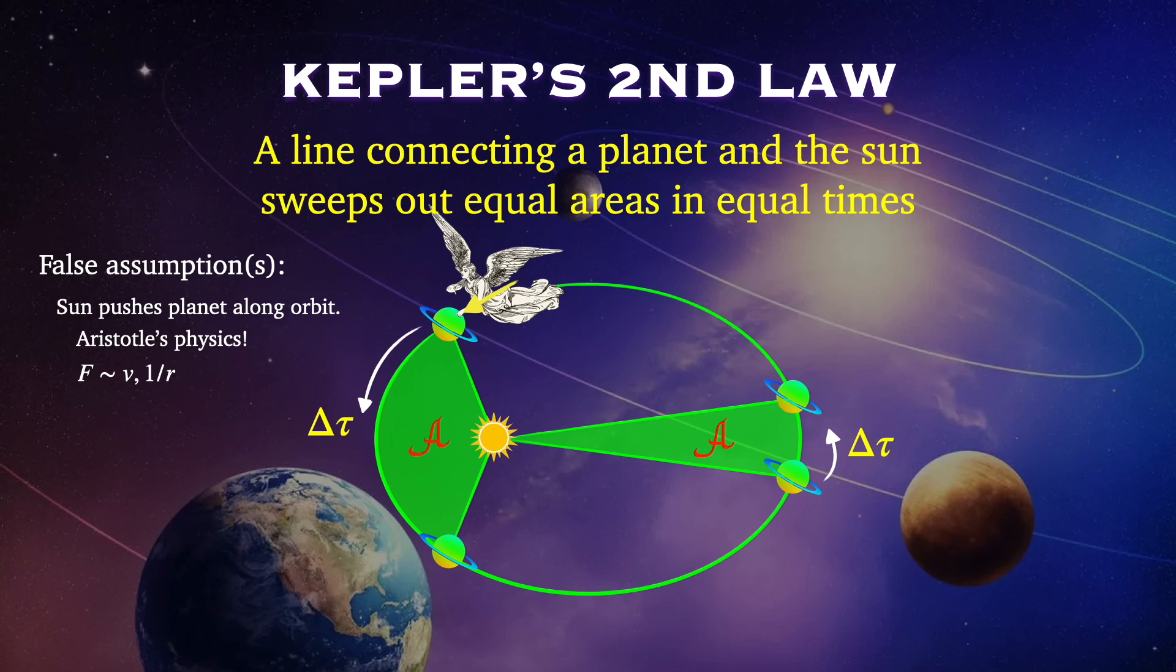Now, once Newton comes along, we'll know that the force of gravity is not related to the speed of the planet and is actually proportional to one over the distance squared. And it also doesn't point along its orbit, but towards the sun. Both of these laws were published in Kepler's Astronomia Nova, and they worked really well. But Kepler continued working on this problem of planetary motion.